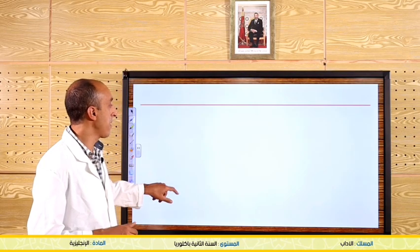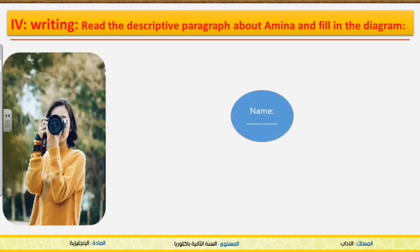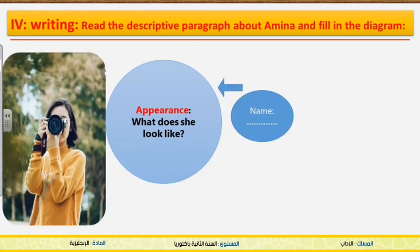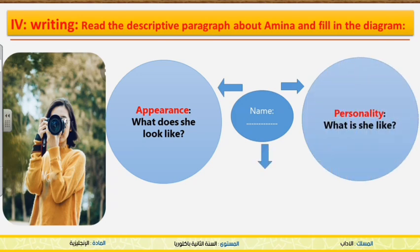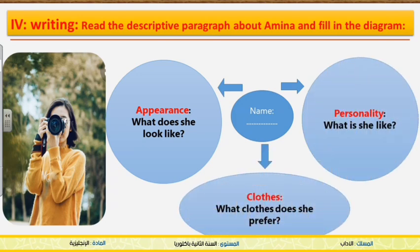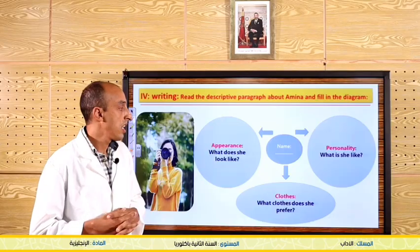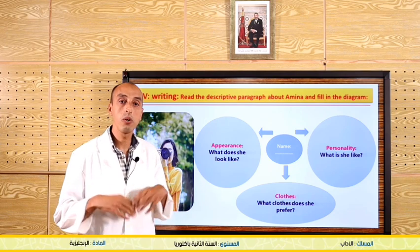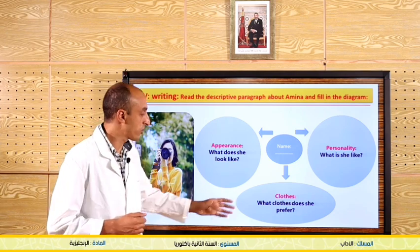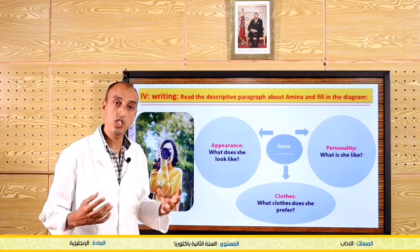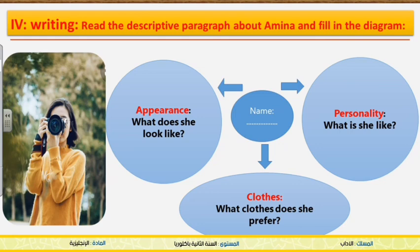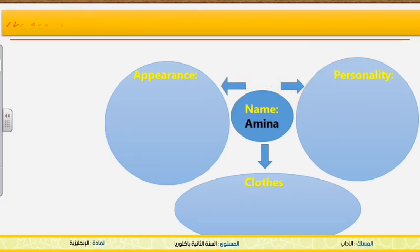Let's analyze the paragraph and try to fill in this diagram. We're going to focus on her appearance — that is, what does she look like? We're going to describe her appearance. Then we're going to see what she is like, that is, how is her personality? Then we're going to speak about the clothes that she prefers to wear and also some of her talents. You can take notes using a pen and a notebook.